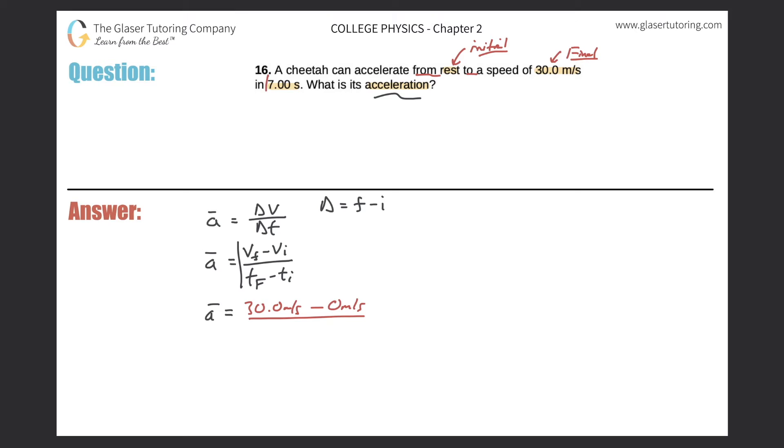So it says it took the cheetah 7 seconds to do this. I can assume that the time value at the beginning was 0 - that's when the clock essentially started. So therefore, the final time would have been 7.00 seconds, and the initial time was 0 seconds.